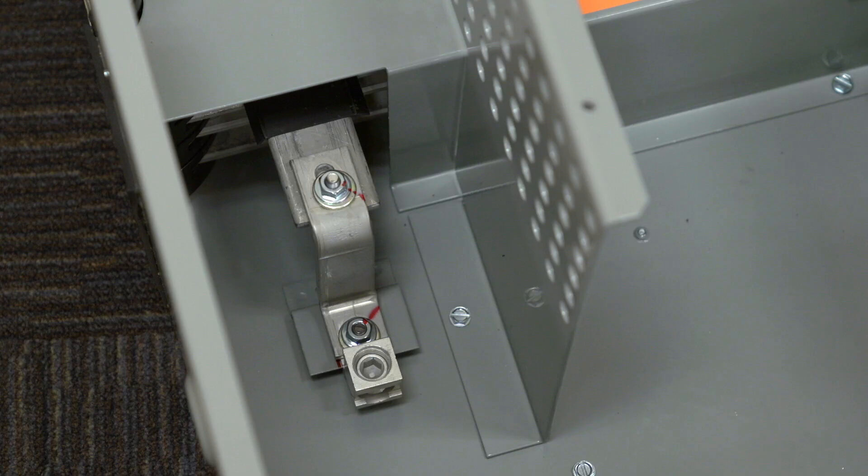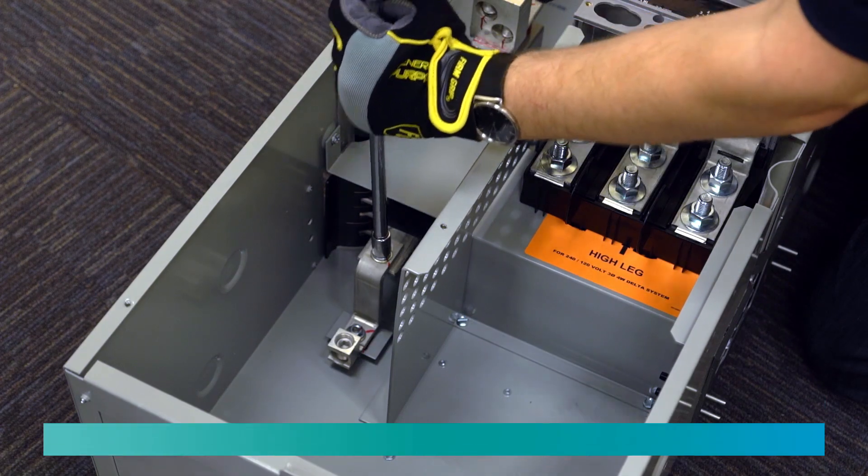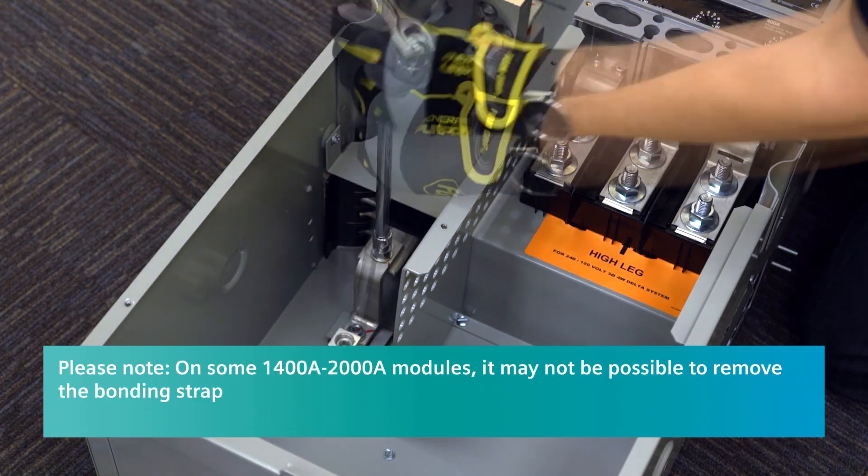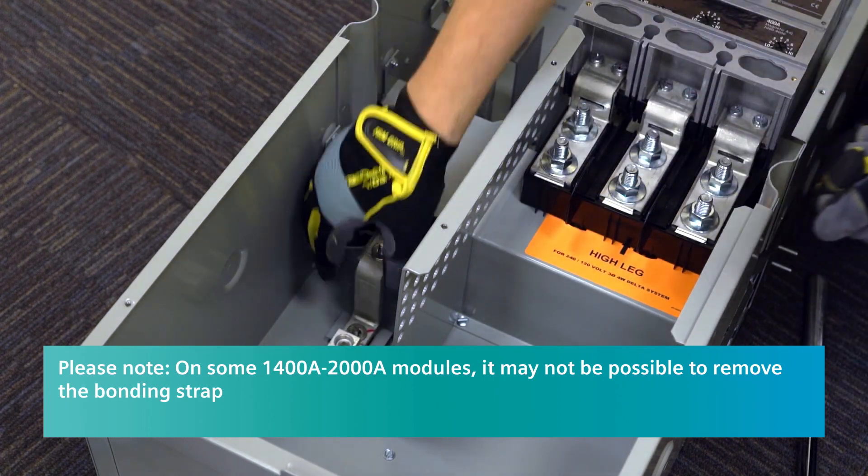All PowerMod service entrance main devices come with a neutral and ground bonded. If the module needs to be used in a non-service entrance application, the bonding strap between the neutral and ground must be removed.